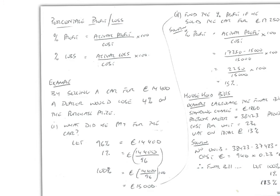Let's look at percentage profit and loss. The percentage profit can be calculated by finding the actual profit divided by the initial cost times 100, whereas the percentage loss can be found by dividing the actual loss by the initial cost and multiplying that by 100.